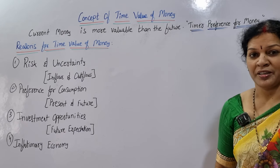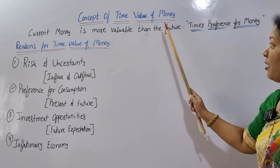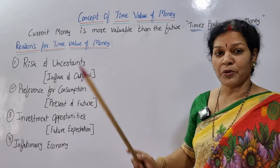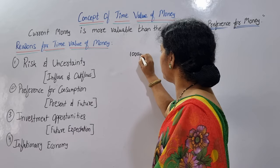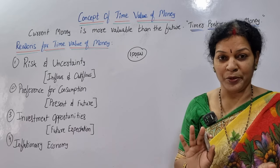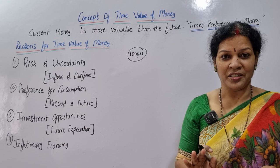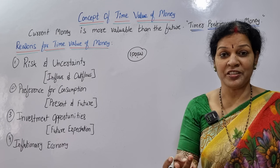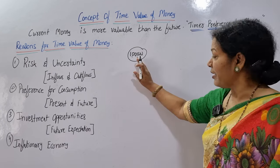Current money is more valuable than the future — this concept we also call as 'time preference for money.' For example, right now in 2023, if I have 1 lakh rupees, with that 1 lakh I can buy a TV, refrigerator, mixi, and some other items.